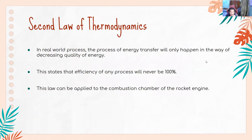For the second point, every energy consists of quality and quantity. In real-world processes, things will only happen in the direction of decreasing quality of energy — there will always be some losses. This shows that the efficiency of any energy transfer process will never reach 100 percent. This law can be applied to the combustion chamber of the rocket engine: only some of the energy produced by fuel through combustion is converted to work output, while most of the energy produced is wasted to the surroundings in the form of heat.